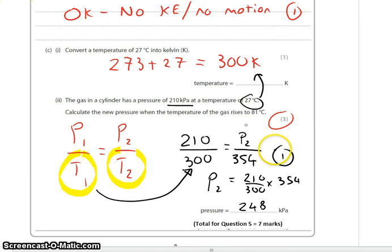So one mark is going to come from converting into Kelvin. One from showing your workings. And one for your answer.